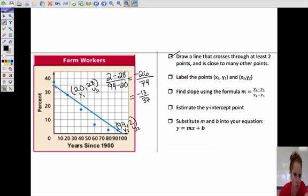Estimate our y-intercept. Looks like 35. And we write our equations. Y equals negative 13 over 37x plus 35.